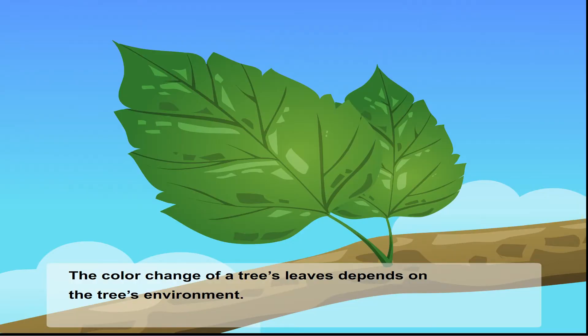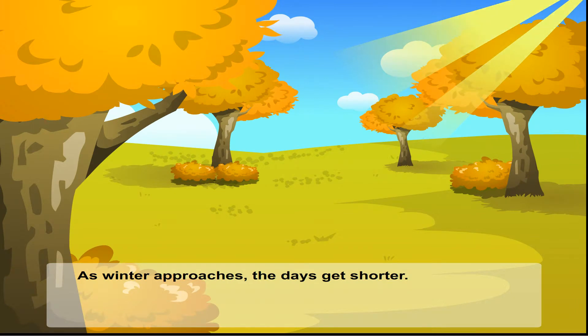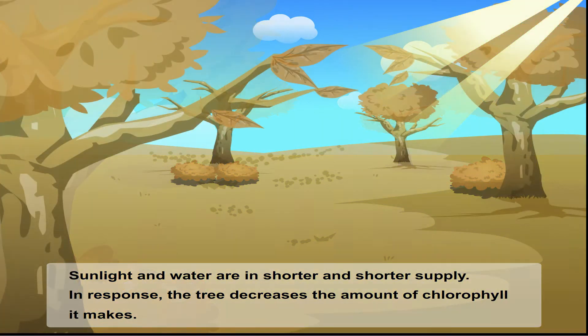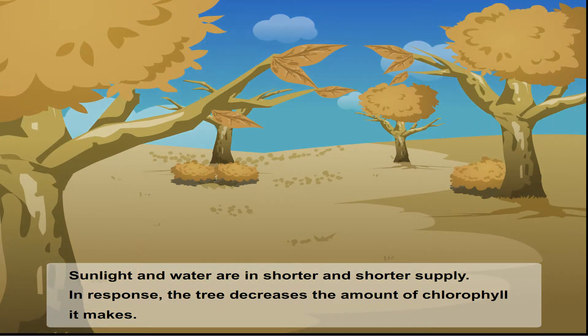The color change of a tree's leaves depend on the tree's environment. As winter approaches, the days get shorter. Sunlight and water are in shorter and shorter supply. In response, the tree decreases the amount of chlorophyll it makes.